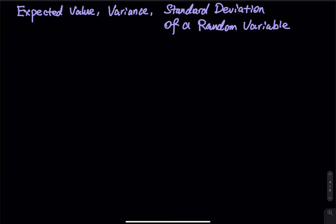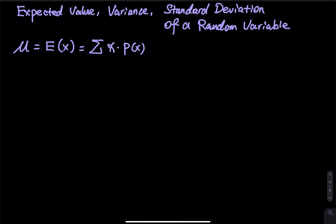In this video, we are going to talk about how to find the expected value, standard deviation, and variance of a discrete random variable. So first of all, the expected value — we use the letter mu. Mu is equal to the expected value E of random variable x, which equals the sum of x times P(x), where x is the outcome and P is the probability corresponding to that specific outcome.